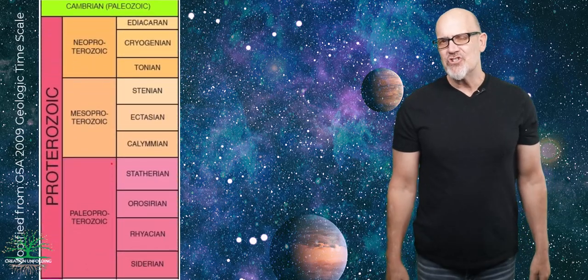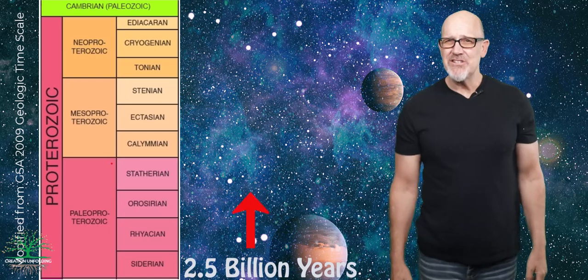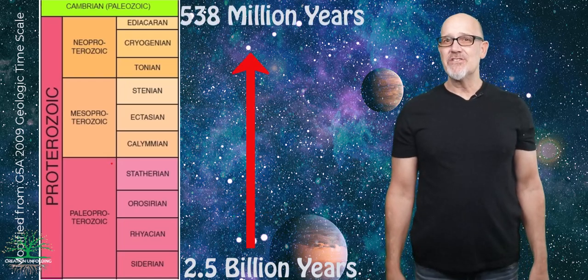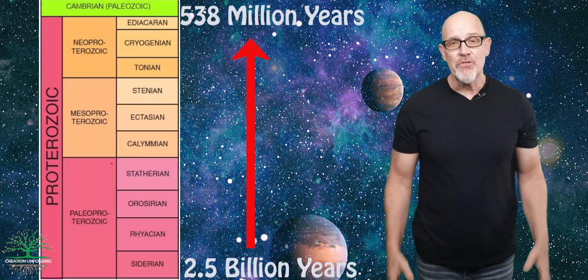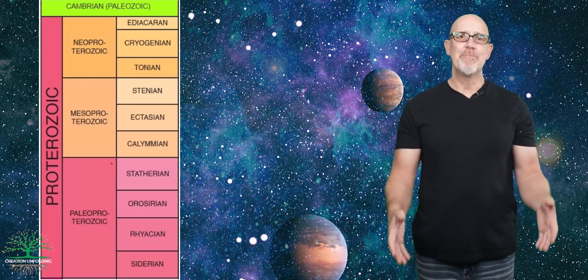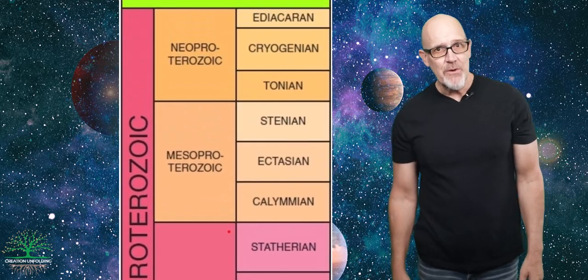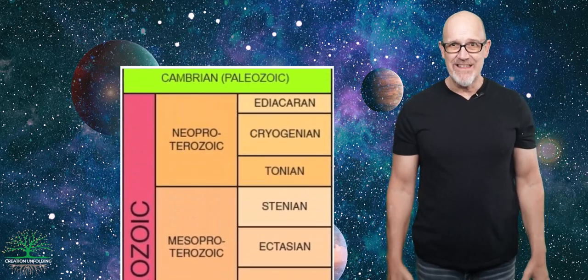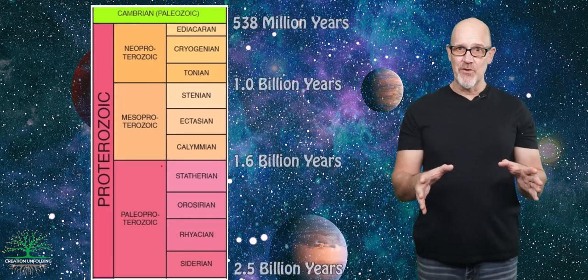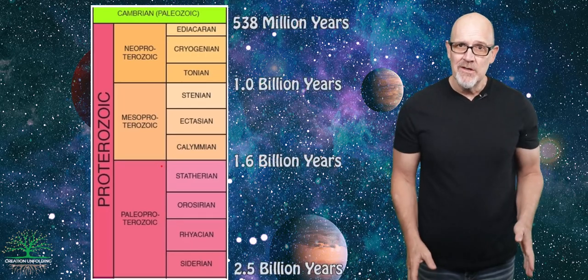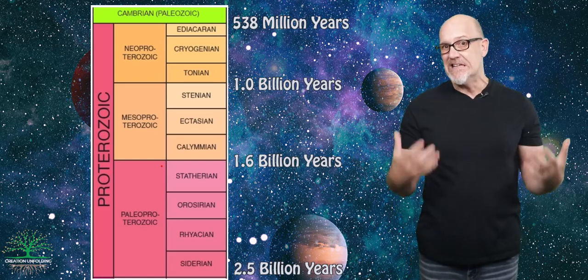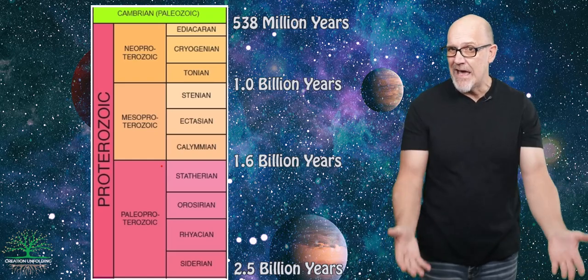Welcome back to our series on historical geology. In this video we're looking at the Proterozoic Eon, which stretches from 2.5 billion years ago to about 530 million years ago using conventional dating systems. The Proterozoic is broken into three eras: the Paleo-Proterozoic, the Meso-Proterozoic, and the Neo-Proterozoic — Paleo meaning old, Meso meaning middle, and Neo meaning new.